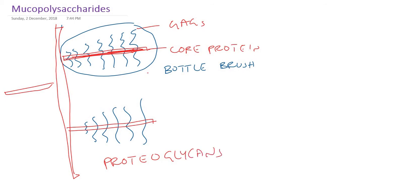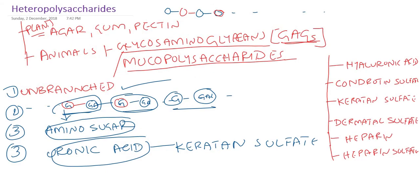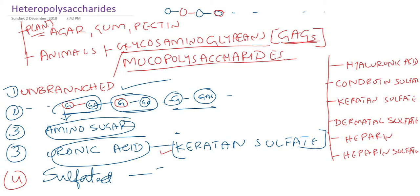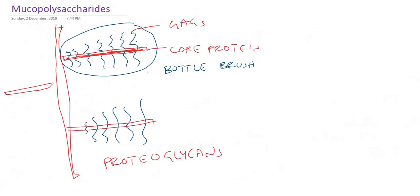Mucopolysaccharides are unbranched repeating disaccharides. One component is amino sugar, another is uronic acid. The exception is keratan sulfate — it does not contain uronic acid. Almost all glycosaminoglycans are sulfated, except hyaluronic acid, which is unsulfated. So keratan sulfate is the exception for uronic acid, and hyaluronic acid is the exception for sulfation.